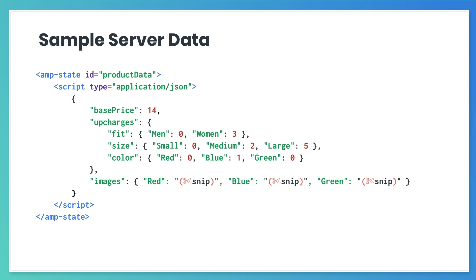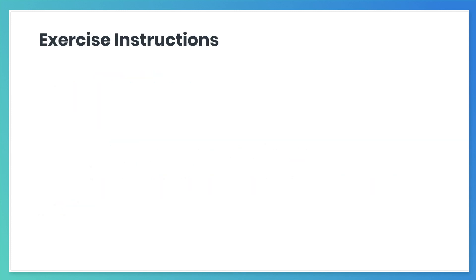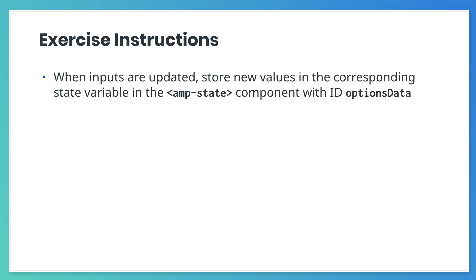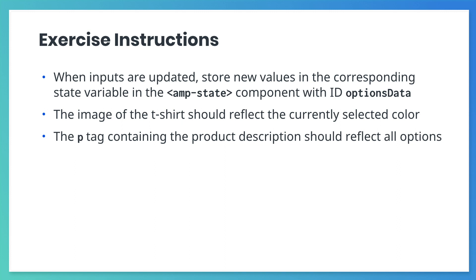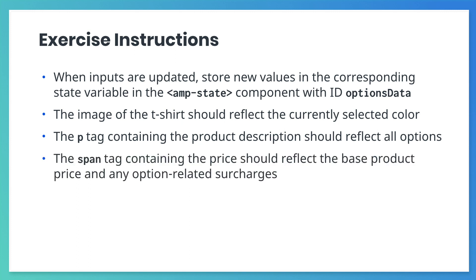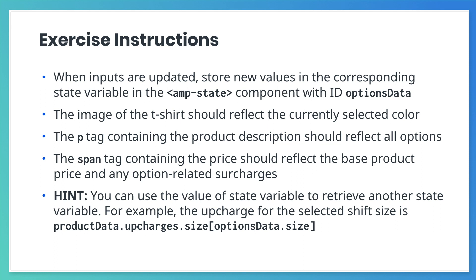Finally, the images section contains URLs for shirt images. Using the AMP bind and AMP state documentation, update the basic product page to meet these requirements. When the user updates the fit, size, or color select inputs, store the new values in the state variables in the AMP state component with ID options data. The image of the t-shirt should correspond to the color option selected by the user. The paragraph tag containing the product description should update to reflect the currently selected product options. The span tag containing the dollar portion of the product price should update to reflect the base product price and any upcharges related to the currently selected product options. Here's a hint: you can use the value of a state variable to retrieve another state variable. For example, the upcharge for the selected shirt size is product data dot upcharges dot size, and then you put brackets options data dot size. Now pause the video and try this out.